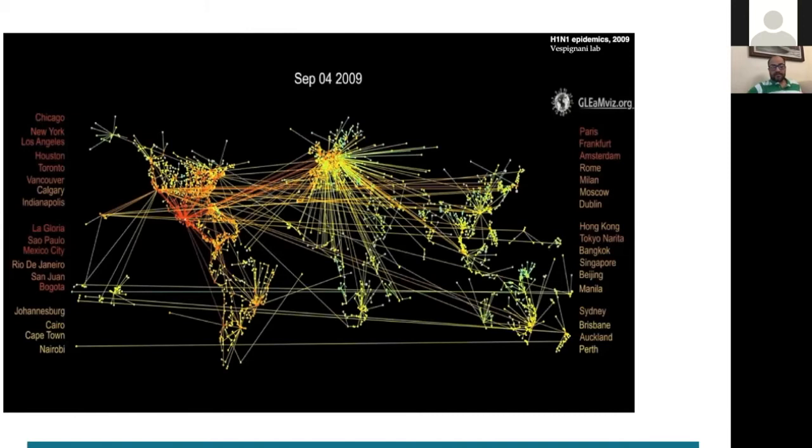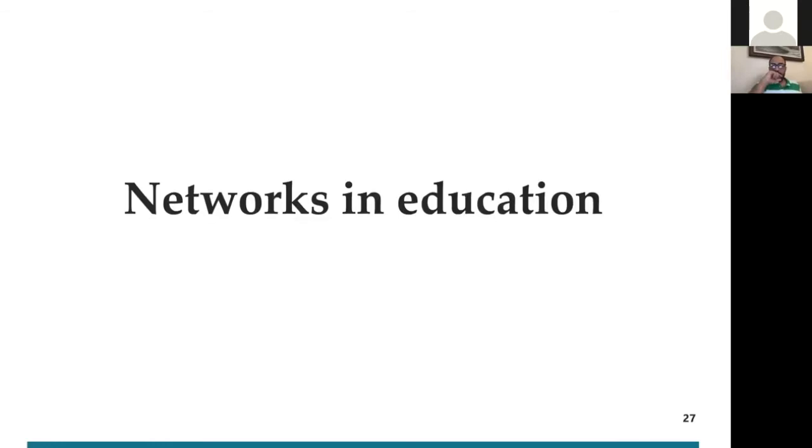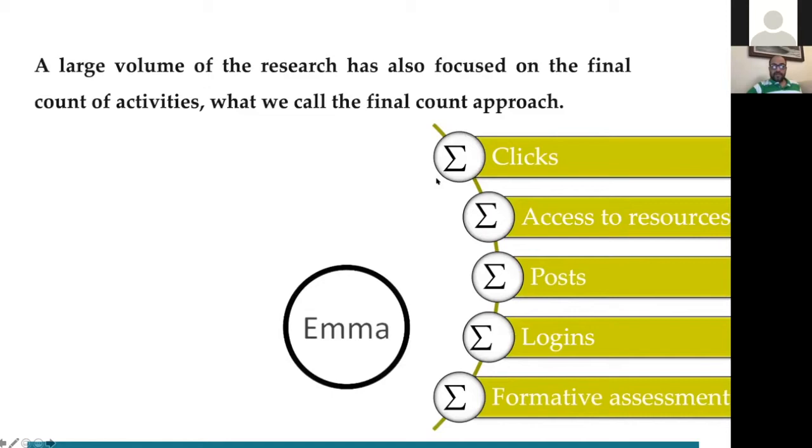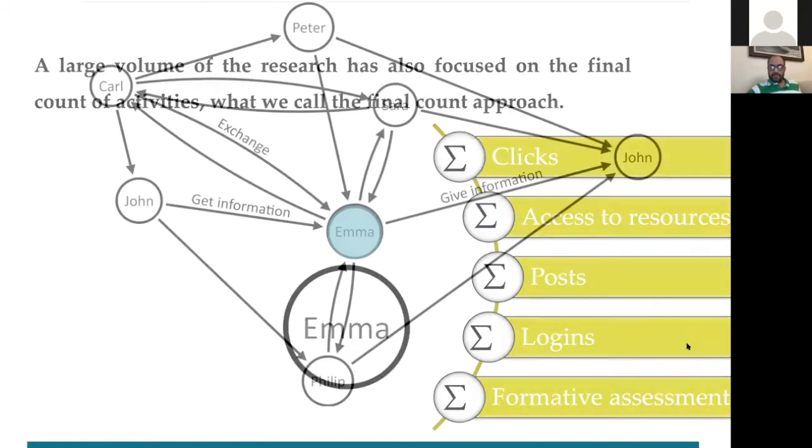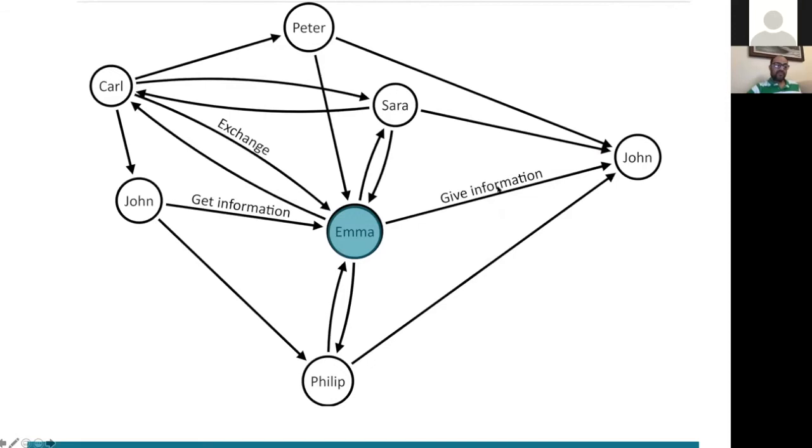So usually in learning analytics, we look at, for example, if we have Emma, we look at Emma's clicks, access to resources, posts, logins, informative assessment. But we always forget that Emma is in a network, gives information, exchanges information. Her actions and her interactions that have utterances are dependent on the actions of others. That's why networks have a role here. I will start. OK, so this is what networks can do.